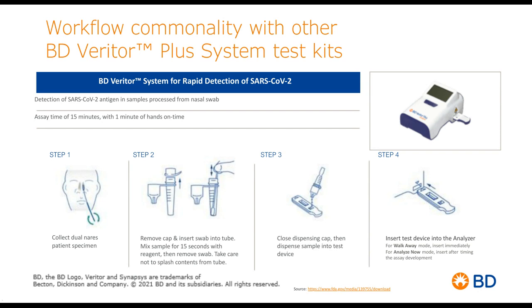Snap down the dropper cap on the reagent vial, invert it, and dispense three drops of solution into the well marked with the three-drop icon. Set your timer and let the sample incubate for 15 minutes. At the end of the 15-minute incubation period, turn on your reader. It will go through a quick self-test and then give you instructions to insert the test cartridge into the side of the reader. It takes about three seconds with a countdown to give you a result — it will say COV-2 negative or COV-2 positive. It really could not be any simpler.